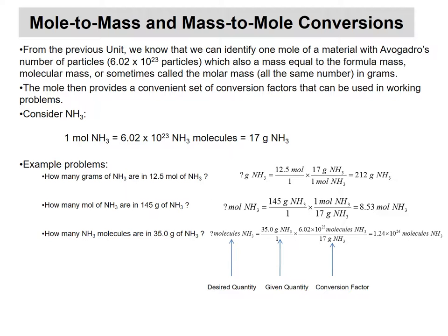Now let's look at moles-to-mass and mass-to-moles conversions. This is the same sort of approach. From Unit 18, you know that one mole of material contains Avogadro's number of particles — 6.02 × 10²³. The other way to think about it is that the mass of one mole in grams equals the formula mass, obtained by adding up the atomic weights. So the mole gives us a nice linchpin to go back and forth between different ways of measuring material.